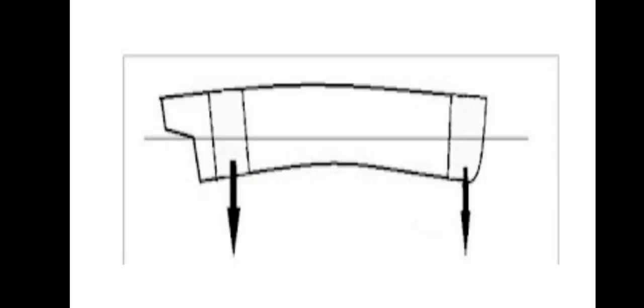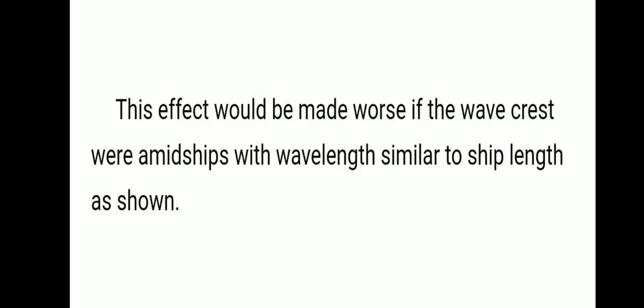There will be longitudinal stress acting on the fore and after end, so the center portion of the hull will tend to hog — the forward and aft ends tend to droop. This effect would be made worse if the wave crest were amidships with a wavelength similar to that of the ship, as shown.